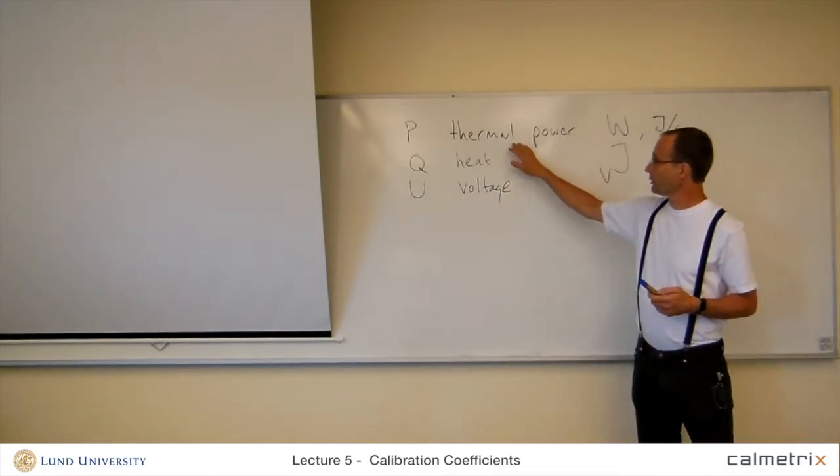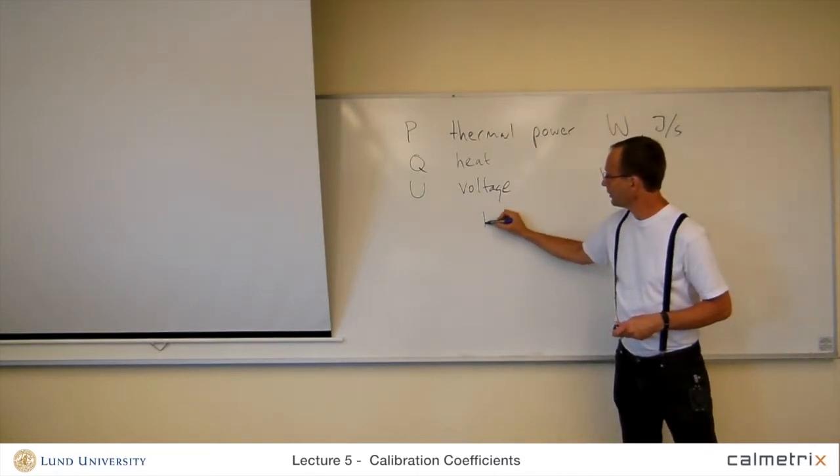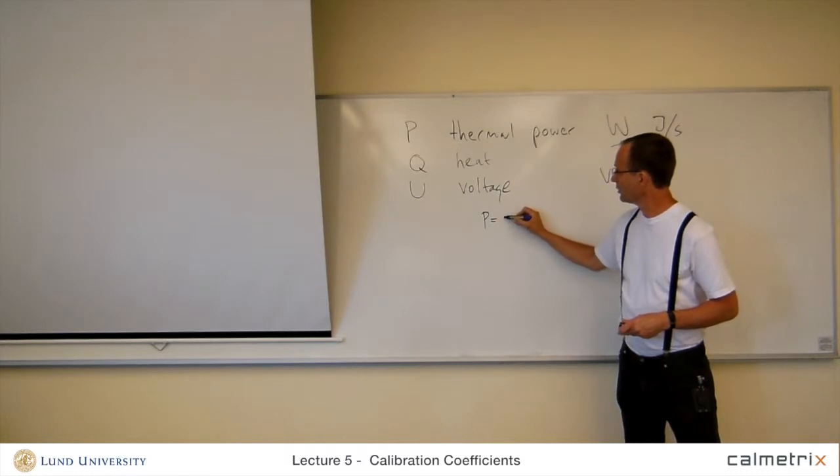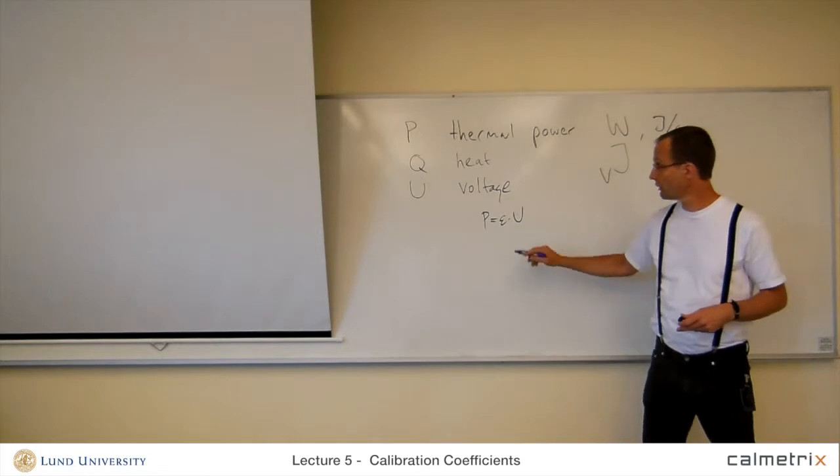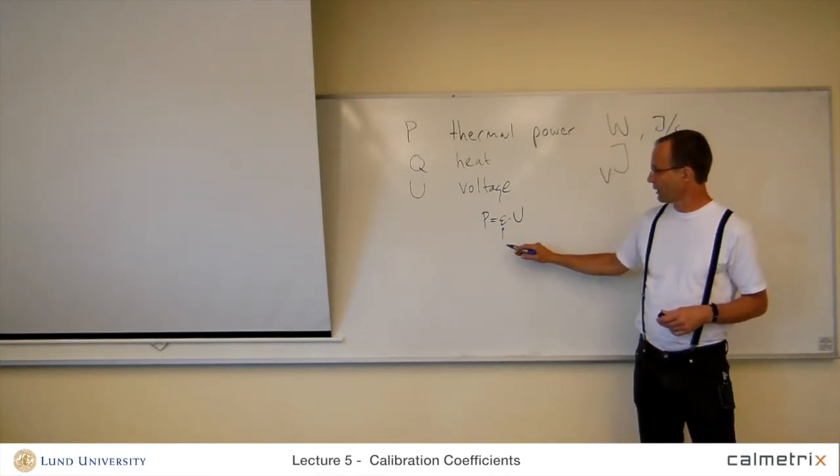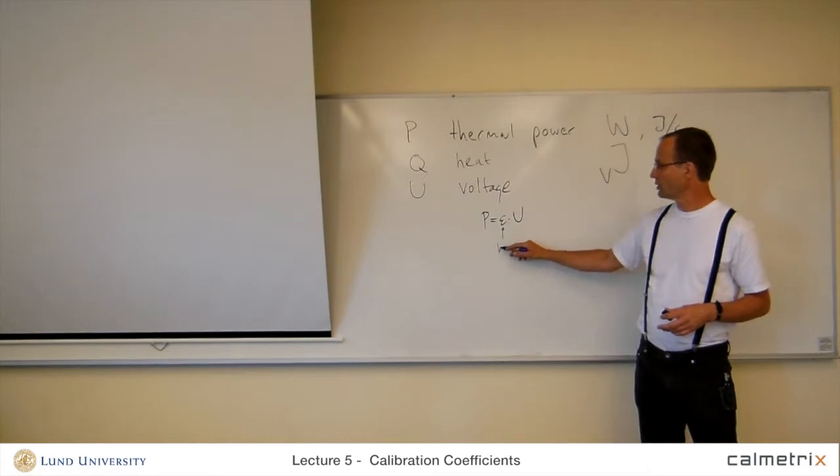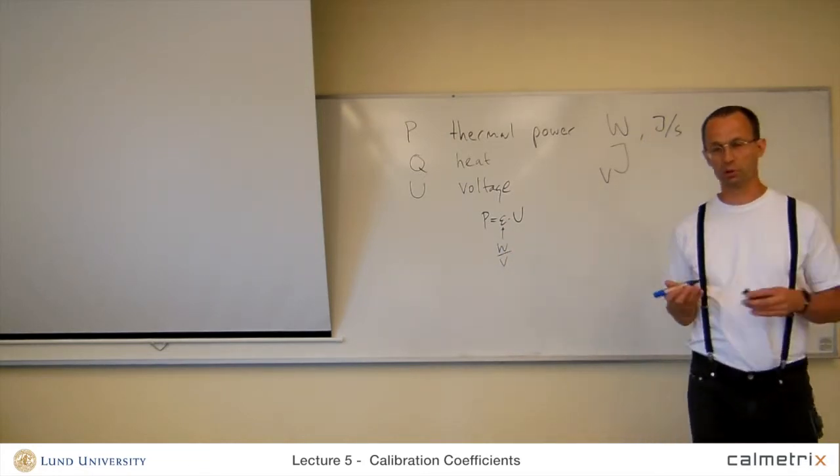Now the thermal power is proportionate to the voltage. So P is the calibration coefficient, which we call epsilon here, times the voltage. And the calibration coefficient then has units of watts per volt, or milliwatts per millivolt.